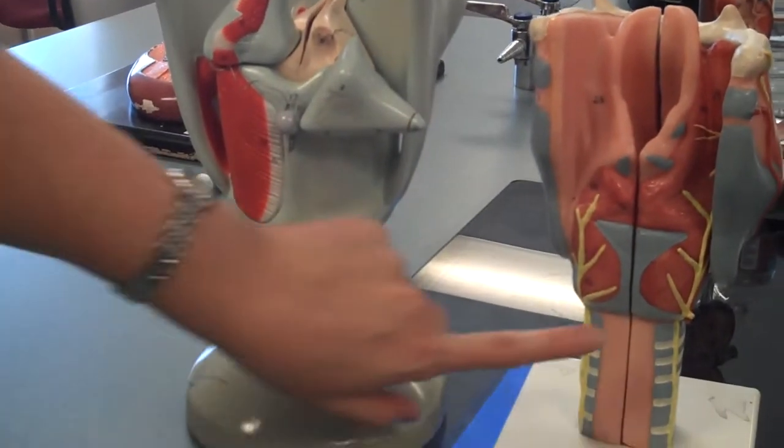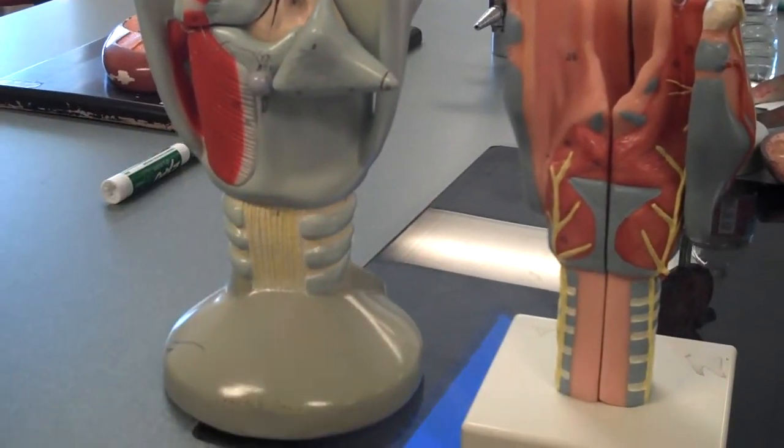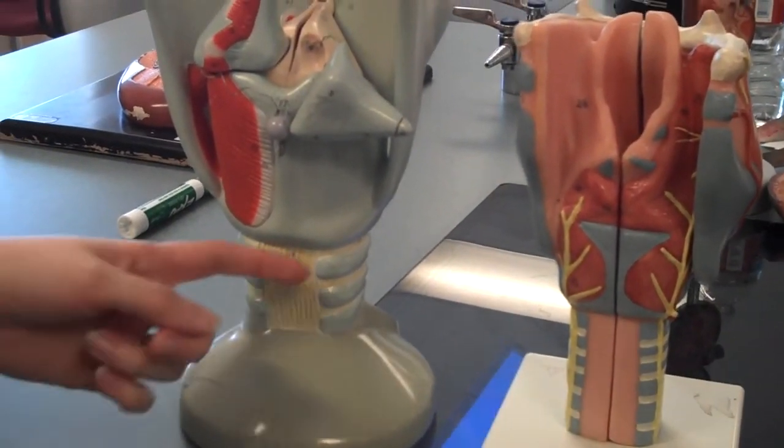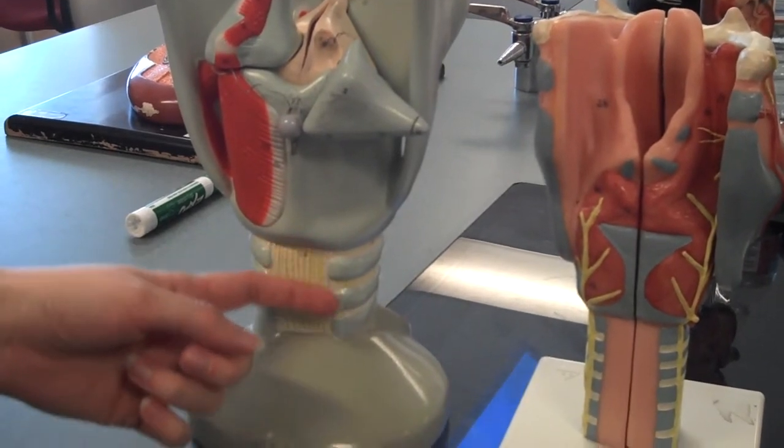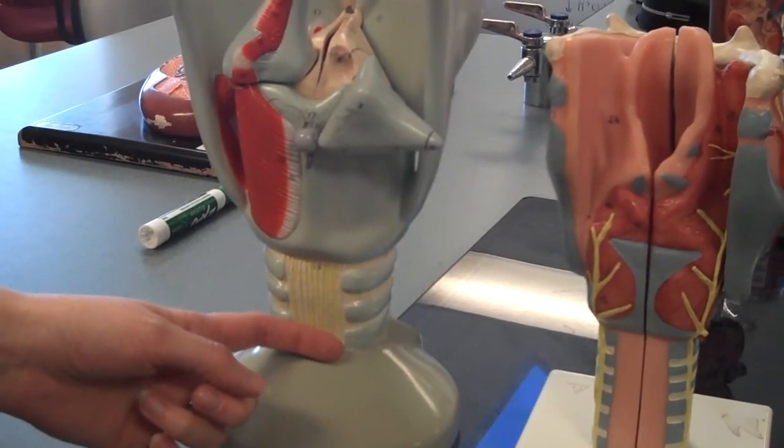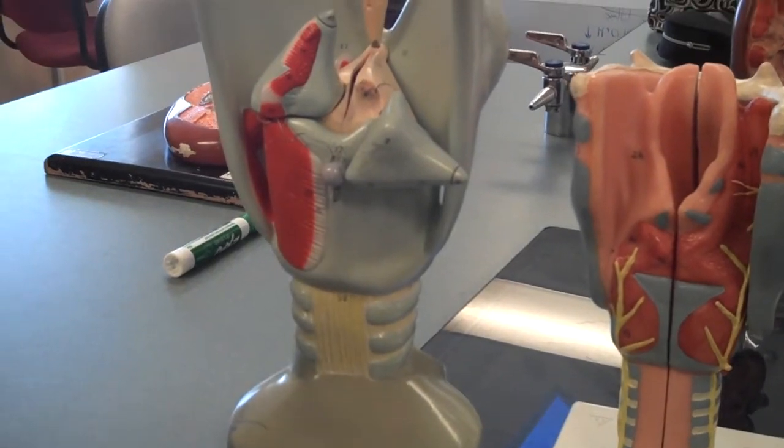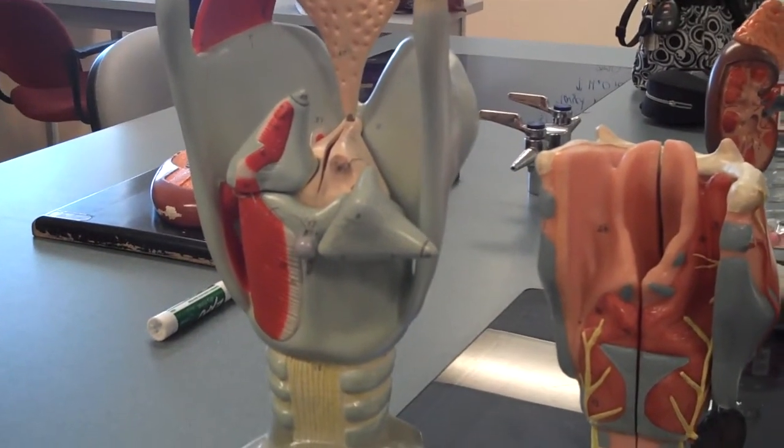Here you can see the opening where the C-shaped cartilages don't actually converge. That allows for the esophagus to sit quite close to the trachea. That allows for the esophagus to enlarge or expand as the food passes through during swallowing.